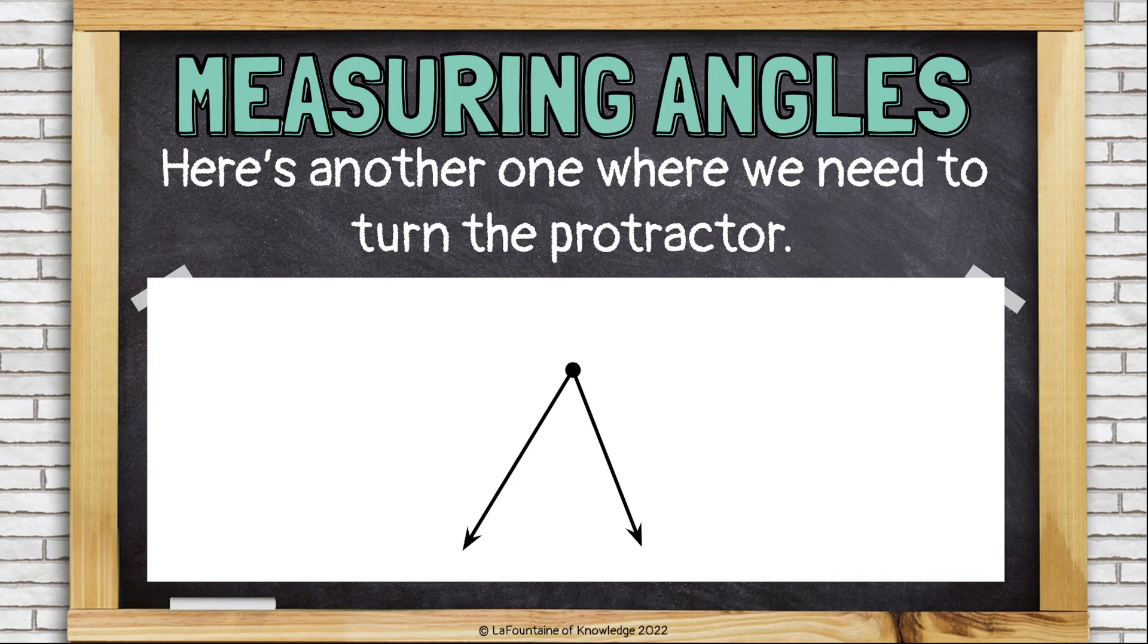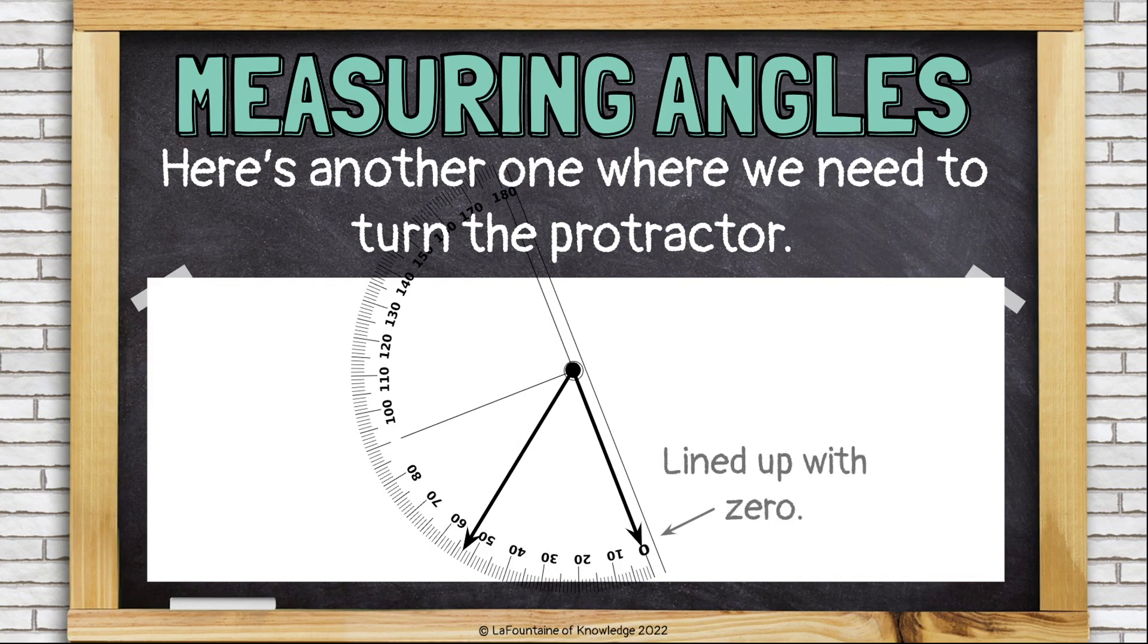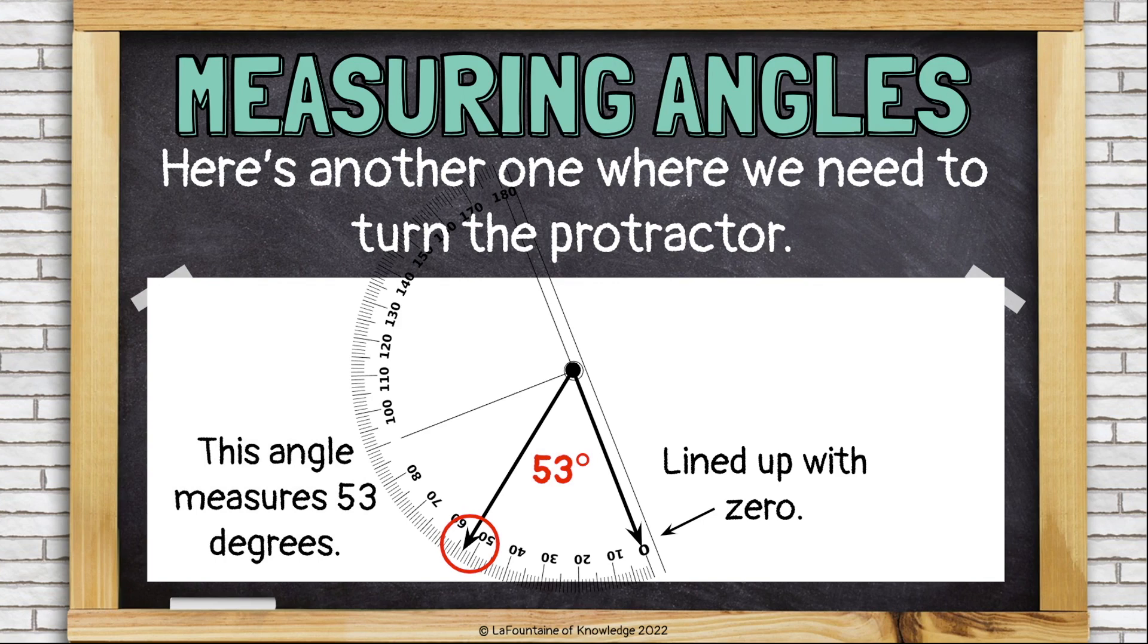Here's another one where we'll need to turn the protractor. One ray is lined up at zero. And the other points to 53 degrees. This angle measures 53 degrees. And that makes it an acute angle.